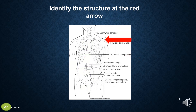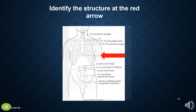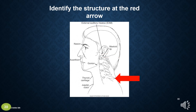Identify the structure at the red arrow — that is the jugular notch at around T2-T3. Identify the structure at the red arrow — that is the xiphoid process at T10. What about this red arrow? That is the vertebral prominence.